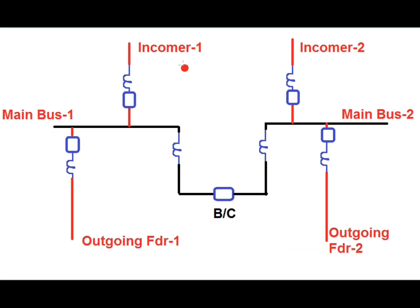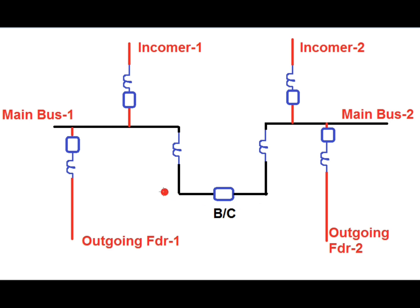In this figure, one incomer and one outgoing feeder are connected to main bus 1 and main bus 2 respectively. Incomer 1 is connected to main bus 1 and outgoing feeder 1 is connected to main bus 1. Similarly, incomer 2 and outgoing feeder 2 are connected to main bus 2. There is a bus coupler breaker via which these two buses are coupled. The CTs are connected to both ends of the bus coupler breaker, and there are also CTs for incomer 1, outgoing feeder 1, incomer 2, and outgoing feeder 2.